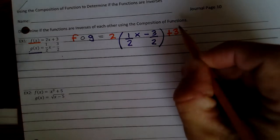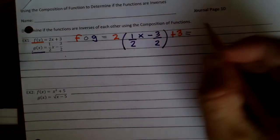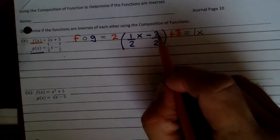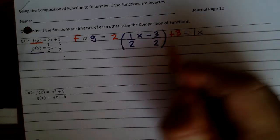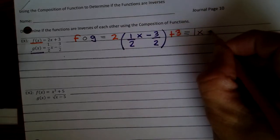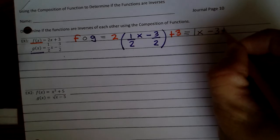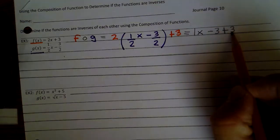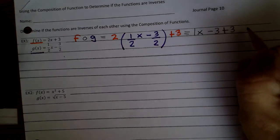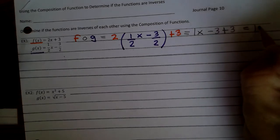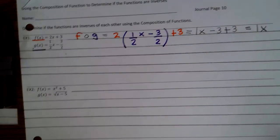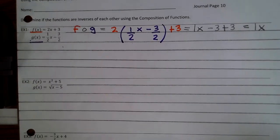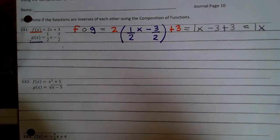Now we're going to simplify. 2 times one-half x is 1x. 2 times negative 3 is negative 6, divided by 2 is negative 3, plus 3. Negative 3 plus 3 becomes 0, so you're left with 1x. So far, f and g could be inverses, but now we need to do g of f.